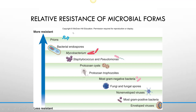The next most resistant form is bacterial endospores, produced by some bacteria in response to a nutrient-depleting environment — when all nutrients or water go away. Endospores are super resistant to many types of disinfectants. After that comes Mycobacterium, which causes tuberculosis and leprosy, then Staph and Pseudomonas, then protozoan cysts, protozoan trophozoites, gram-negative bacteria, fungi and fungal spores, non-enveloped viruses, most gram-positive bacteria with the exception of Staph, and finally enveloped viruses as the least resistant.